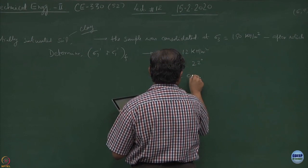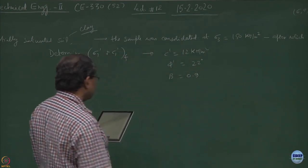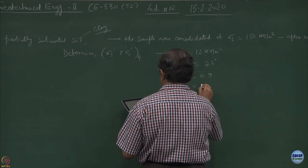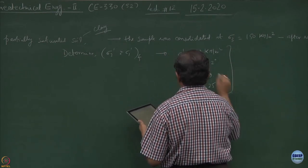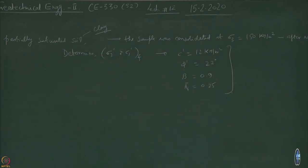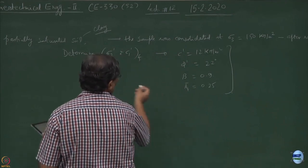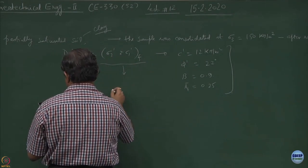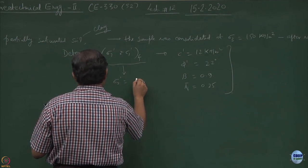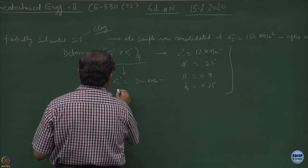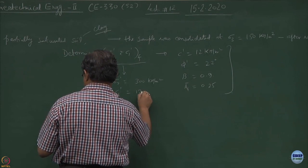If I give you C prime phi prime is same as the previous problem. Only thing is saturated sample less than 0.95 and AF prime is given as 0.25. Rest of the things are same. You will be getting sigma 3 prime as 300 kilo Newton per meter square and sigma 1 prime will be equal to 120.